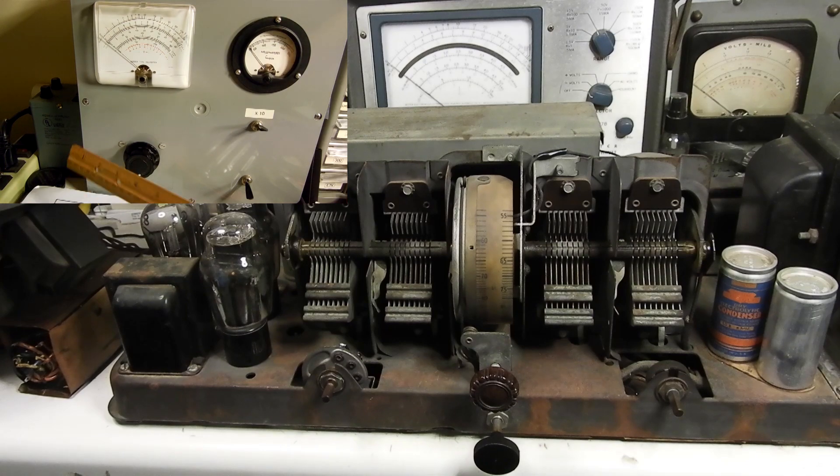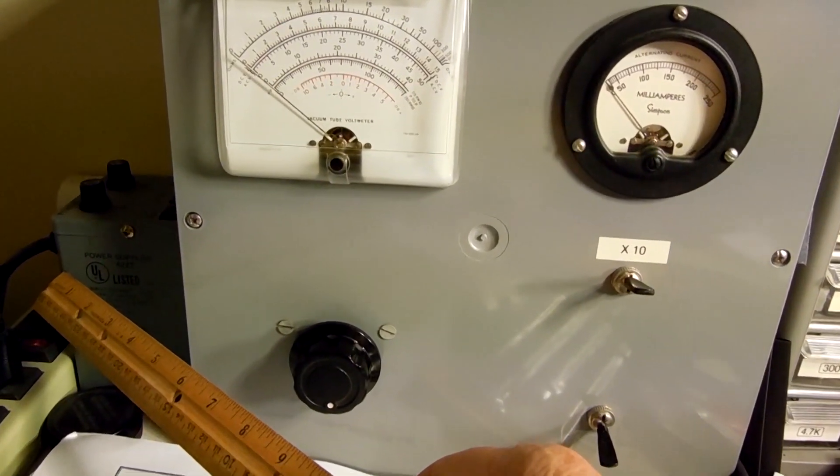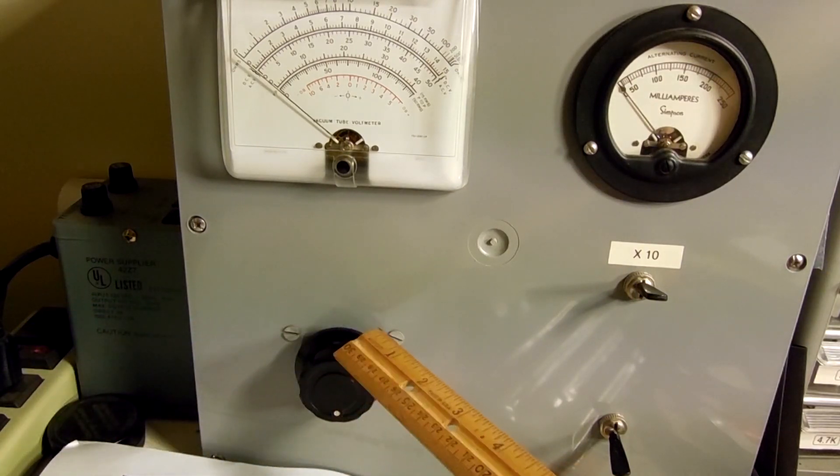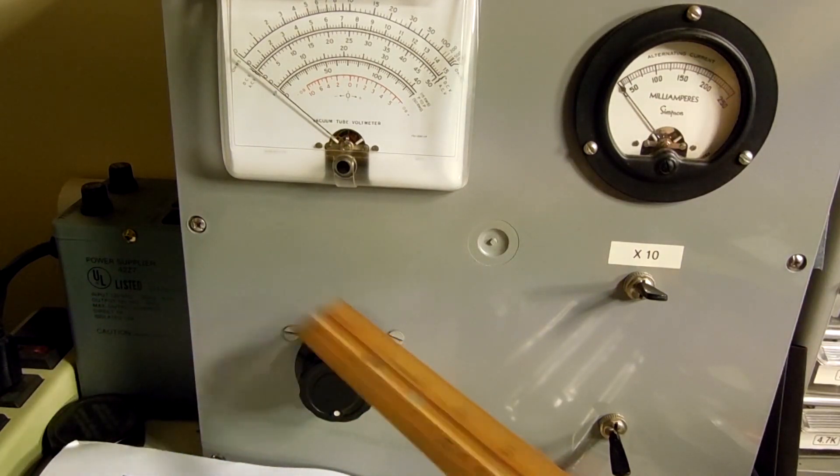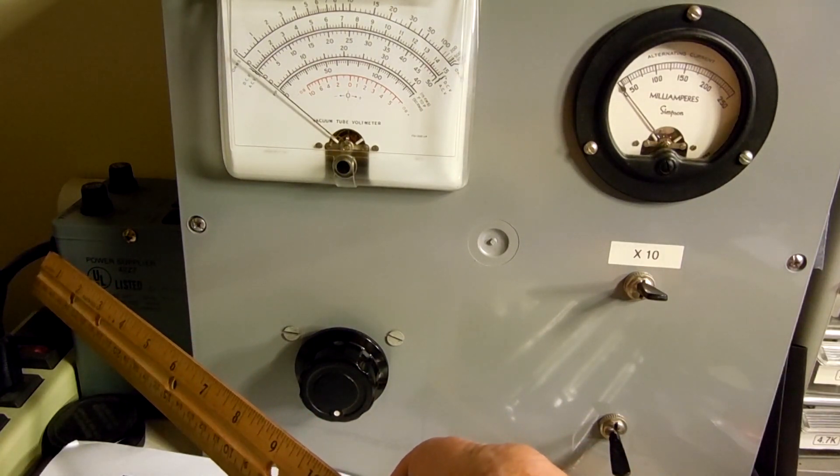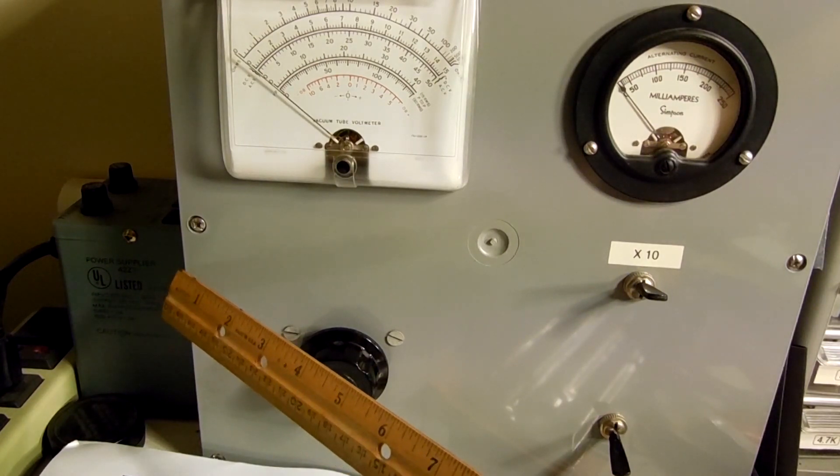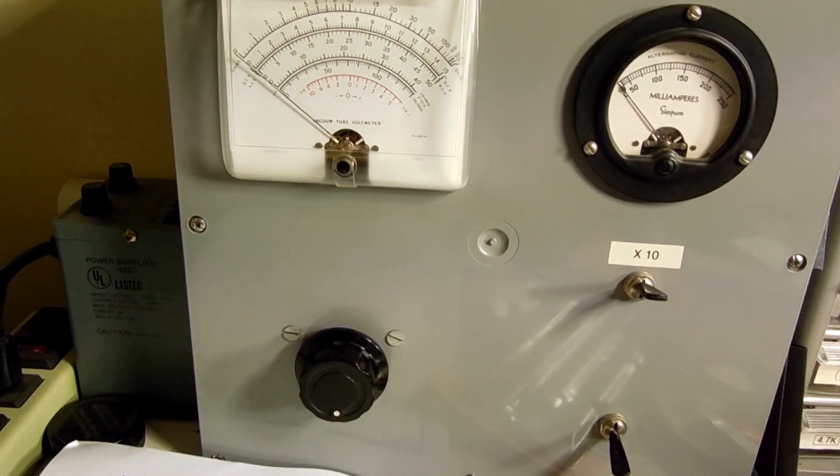Now, my setup is right here. Back here is the isolation transformer. And of course, my Variac right here. And of course, there's 120 volts at the input here and 120 volts at the output here. So, you might, you know, why is it safer?